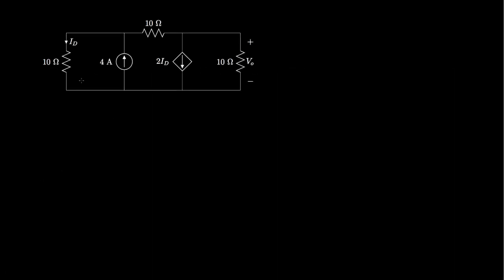Let's take a look at a circuit that has three 10-ohm resistors, a 4-amp independent current source, and a dependent current source whose current is twice the current through this 10-ohm resistor. What we'd like to do is analyze this circuit and determine the voltage across this 10-ohm resistor.